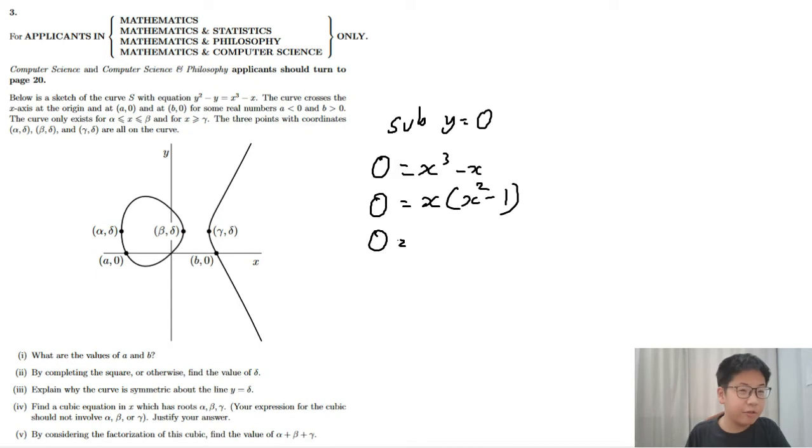And if you use the formula from algebra, you will factorize this even further to get x plus 1 times x minus 1. So the three x-intercepts are minus 1, 0 and 1. Since a is less than 0, a equals negative 1 and b equals 1.